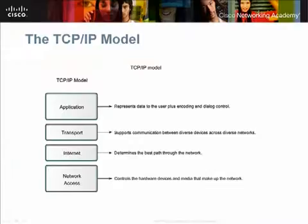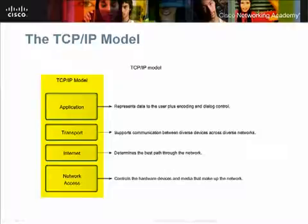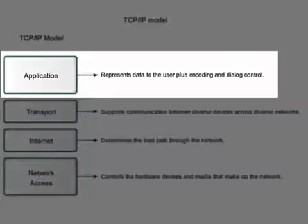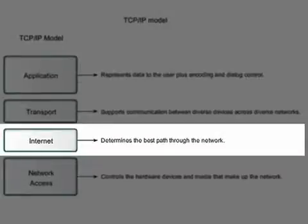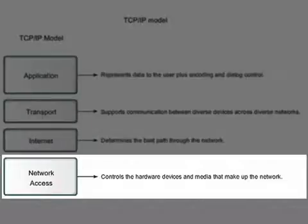As we examine the TCP-IP model, we see that it is made up of four layers: application, transport, internet, and network access. Each layer has specific responsibilities. The application layer is responsible for encoding data into a form that can be sent over a network and to decode data when it is received from the network. The transport layer supports communication between devices when messages are being sent across the network. The internet layer determines the best path for a message to be sent through a network. And the network access layer controls the hardware and the connections that make up the network.